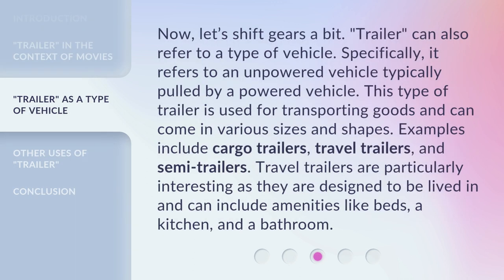Now, let's shift gears a bit. Trailer can also refer to a type of vehicle. Specifically, it refers to an unpowered vehicle typically pulled by a powered vehicle. This type of trailer is used for transporting goods and can come in various sizes and shapes. Examples include cargo trailers, travel trailers, and semi-trailers. Travel trailers are particularly interesting as they are designed to be lived in and can include amenities like beds, a kitchen, and a bathroom.